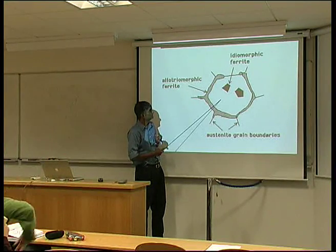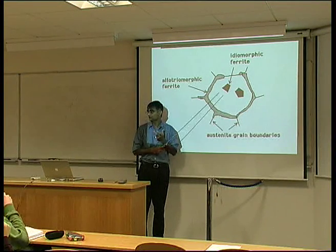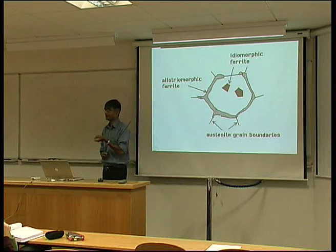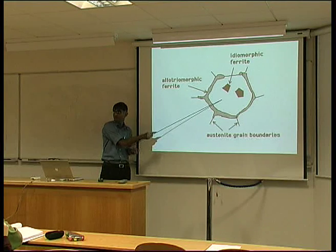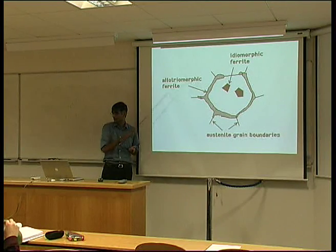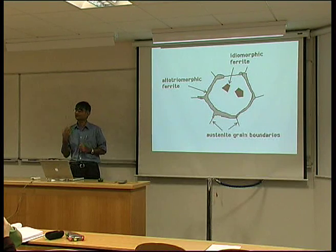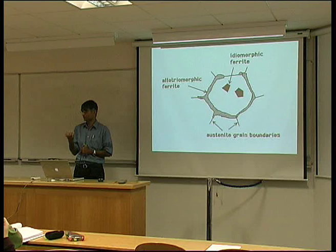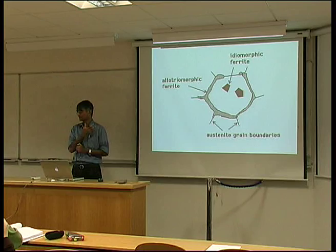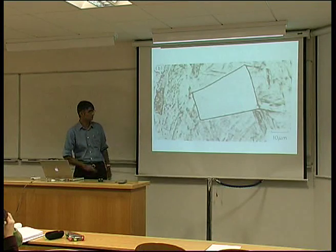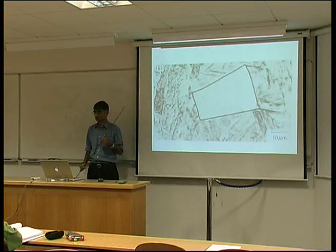Whereas here, a propagating crack will encounter many different grains in different crystallographic orientations. So sometimes in steels we deliberately add non-metallic inclusions — controlled additions — to stimulate the formation of ferrite grains inside the parent austenite grains. Idiomorphic, again, is from the Greek, meaning that its shape has some relationship to the crystalline symmetry — we have crystallographic facets. Here, for example, is an idiomorphic ferrite and you can see there are some crystallographic facets on that grain.